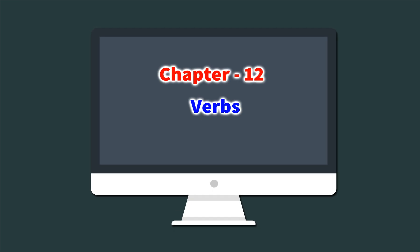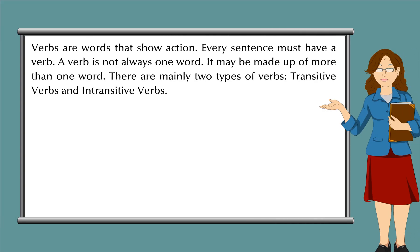Chapter 12: Verbs. Verbs are words that show action. Every sentence must have a verb. A verb is not always one word; it may be made up of more than one word. There are mainly two types of verbs: transitive verbs and intransitive verbs.